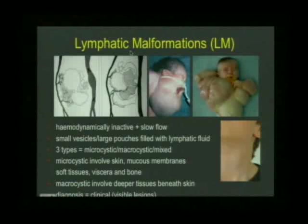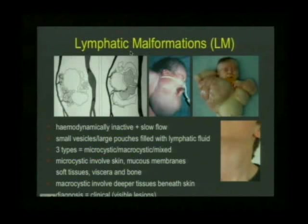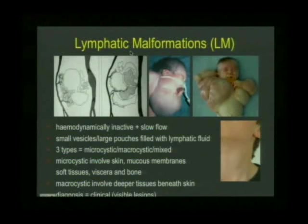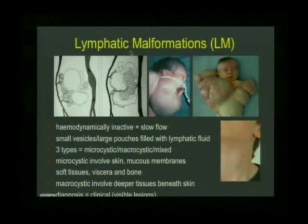Lymphatic malformations are actually quite different — they are hemodynamically inactive and slow flow. They are due to vascular morphogenesis affecting lymphatic channels, again around the fourth week of intrauterine life. The end result is either small vesicles or large pouches filled with lymphatic fluid. We divide lymphatic malformations into microcystic or macrocystic based on cyst size: anything smaller than one centimetre is a microcyst, anything larger is a macrocyst, and you can get combinations of both.